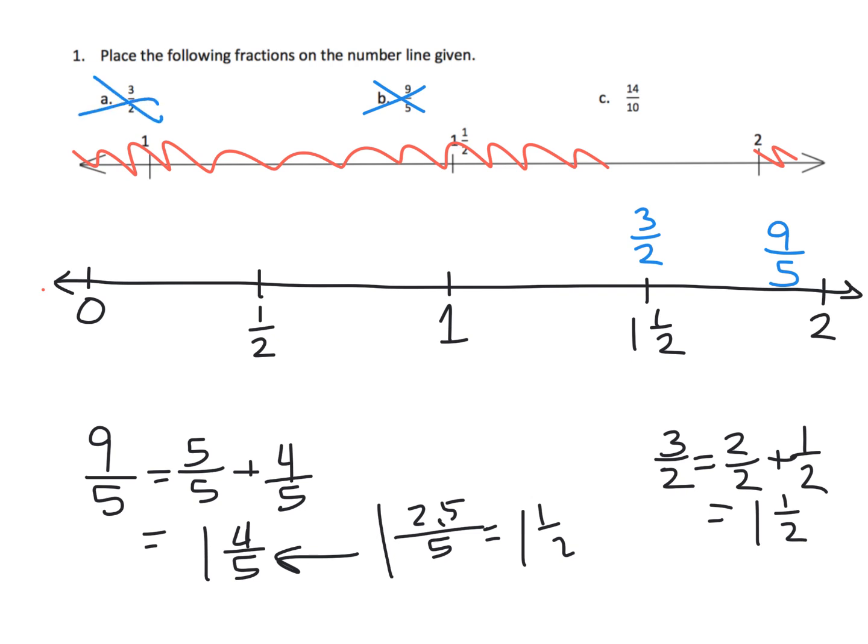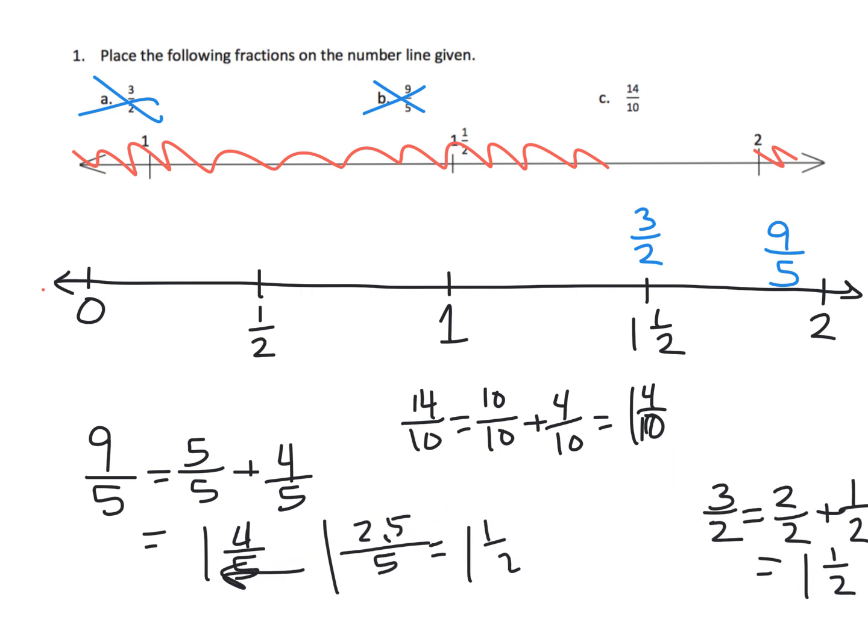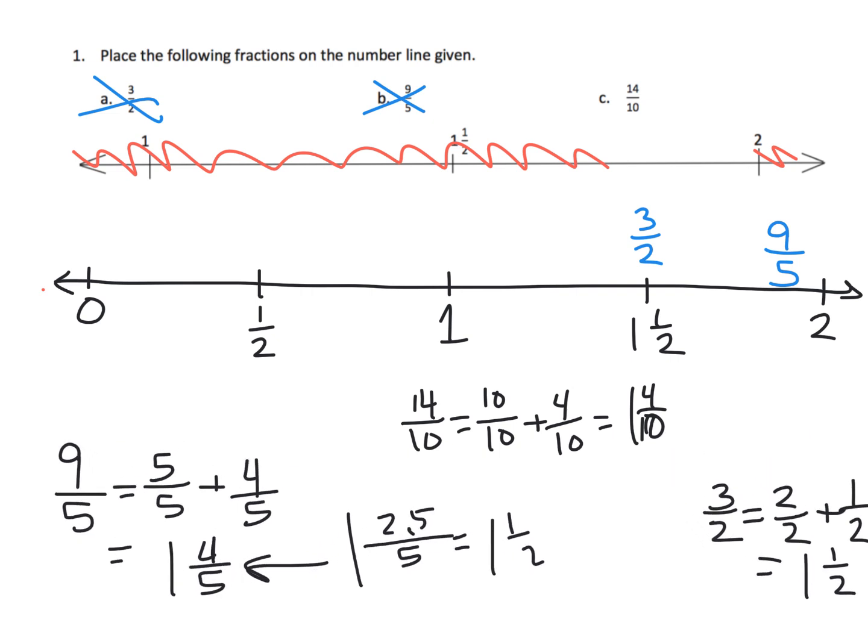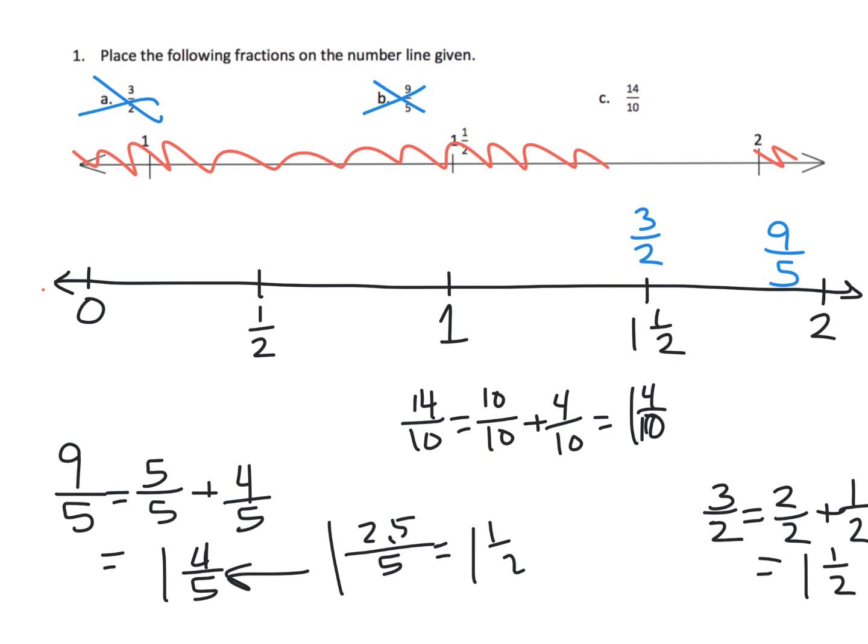And now we have 14 tenths. So I'm going to squeeze in 14 tenths right here. So 14 tenths, that's 10 tenths plus 4 tenths, which is equal to 1 and 4 tenths. All right, so 1 and 4 tenths. Let me move some of this stuff aside here. So we have 1 and 4 tenths. Now 1 and 4 tenths, that's slightly less than 1 and a half.